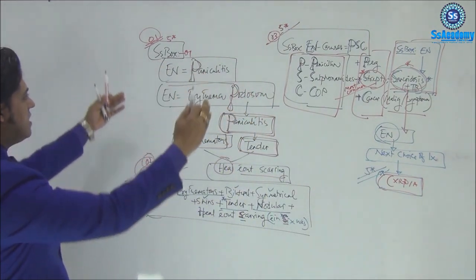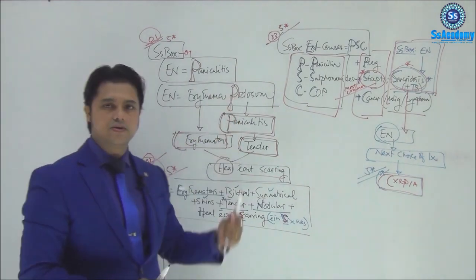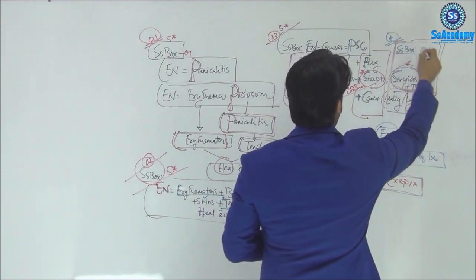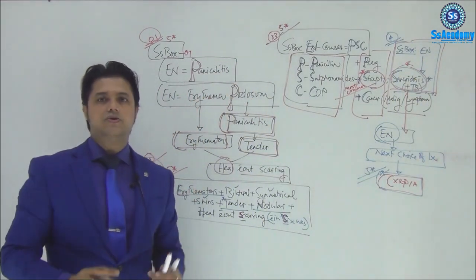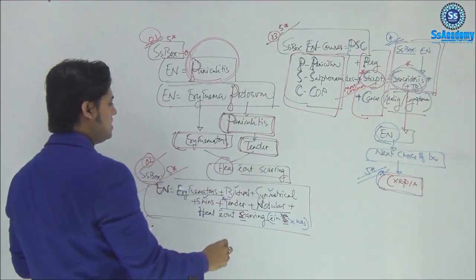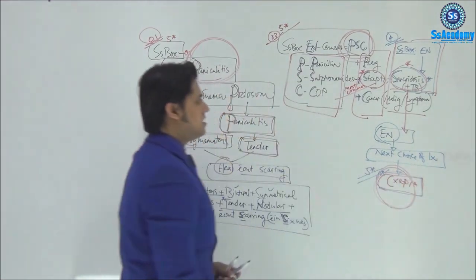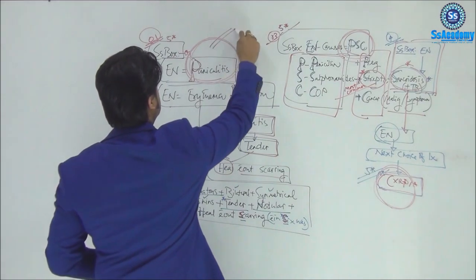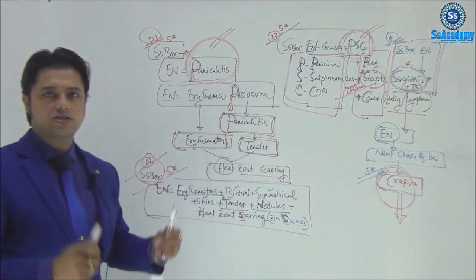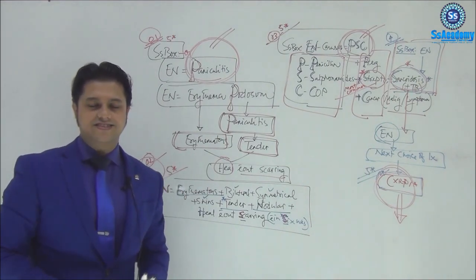So the summary of SS boxes for erythema nodosum: Box One — nodosum is panniculitis. Box Two — erythema nodosum causes are PSC. Box Three (the most important) — for erythema nodosum, the test to do is chest X-ray. Three key words to remember: panniculitis, PSC, and chest X-ray. Thank you very much.